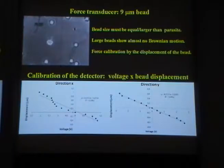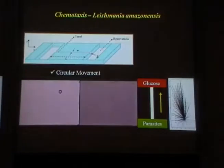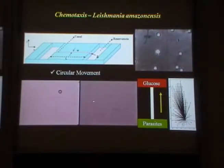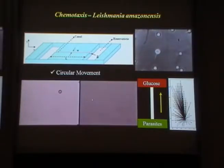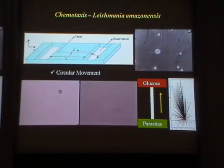Instead of trapping the microorganisms directly, we need to trap a bead, and the bead must be larger than the microorganisms, otherwise each time it passes through the light we're going to have scattering that gives strange features. We put the Leishmania in a concentration of sugar, and we see that the behavior is completely random if there is no sugar concentration. After adding sugar concentration, they start to show a behavior like going in circles instead of random swimming and stopping. If you measure the force, you can see that most of the time they will try to direct themselves toward the sugar concentration, and the strength of the force also changes.